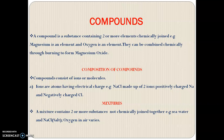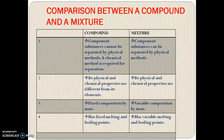Let's compare a compound and a mixture. In a compound, component substances cannot be separated by physical methods — a chemical method is required for separation. But in a mixture, you don't require a chemical reaction to separate what you've combined. In most cases you can even use your hands to separate them, so component substances can be separated by physical methods. For example, if you mix sand and stones, you can easily pick out the stones. That's an example of a mixture.